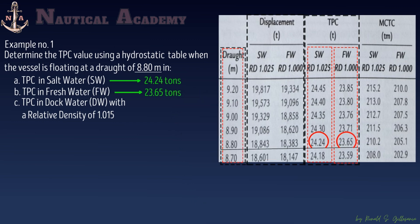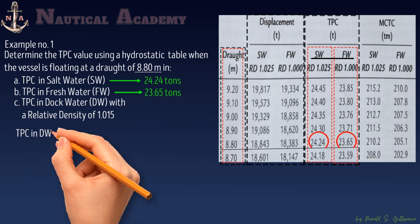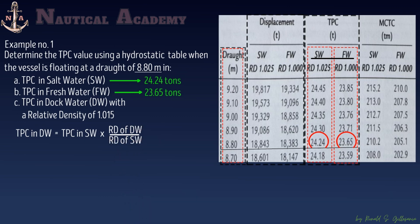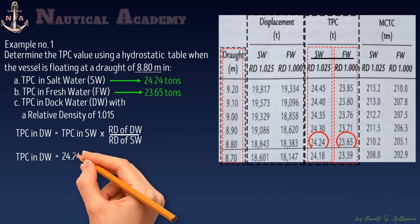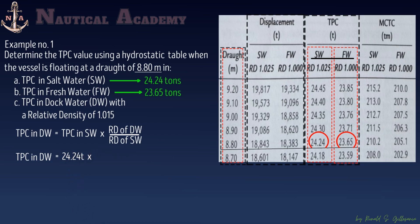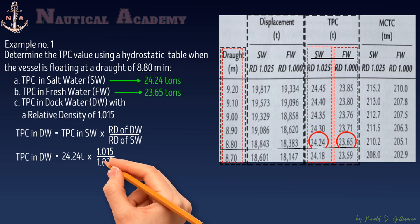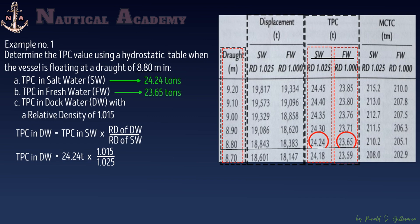For part C, when she is floating in dock water with a relative density of 1.015 at a draft of 8.80 meters, we need to make corrections since the hydrostatic table only gives TPC for salt and fresh water. The formula is: TPC in dock water equals TPC in salt water times the relative density of dock water divided by the relative density of salt water. So TPC in dock water equals 24.24 tons times 1.015 divided by 1.025, and the answer is 24.0 tons.